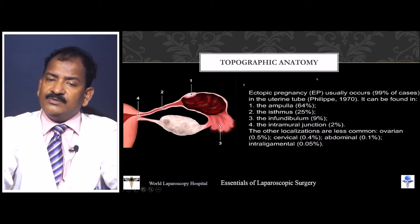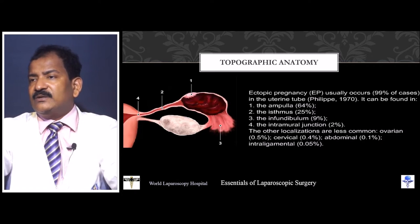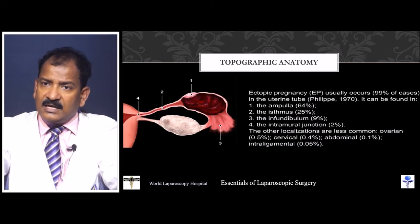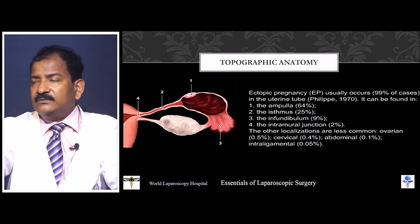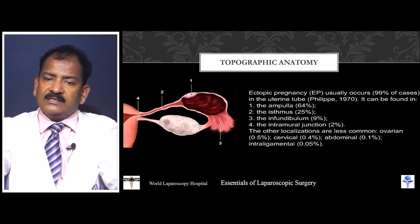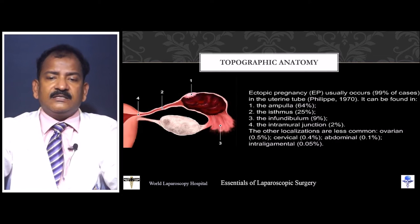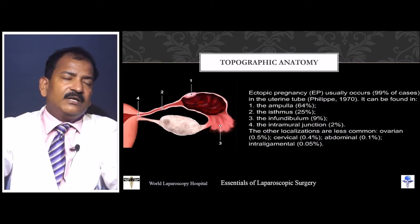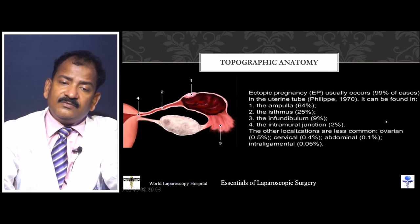The first surgery we will discuss is ectopic pregnancy. As we know, 99% of ectopic pregnancies happen inside the tube. Approximately 64% are in the ampulla, 25% in the isthmus, 9% in the infundibular, and 2% in the intramural or interstitial part. Rarely it may be intraligamentous, ovarian, or abdominal — the incidence is 0.5% and 0.1% respectively.